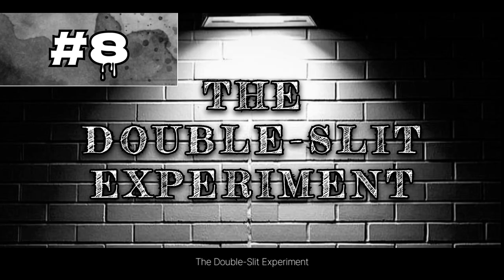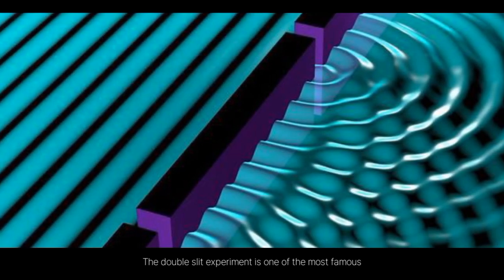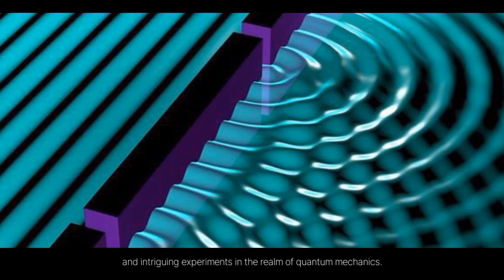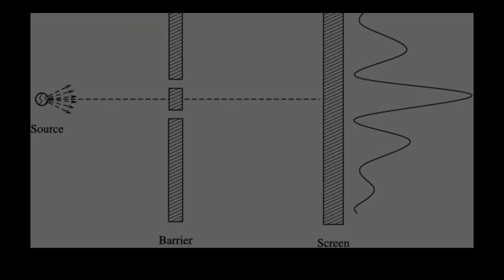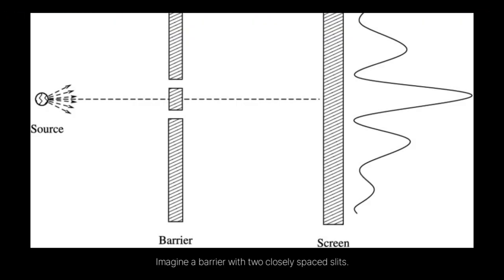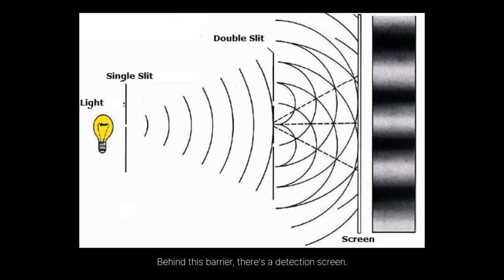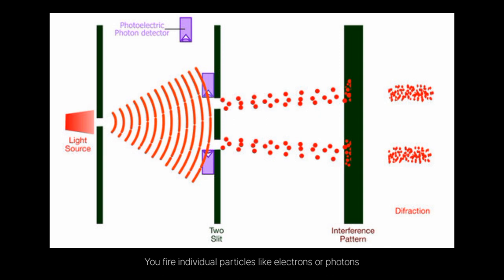The double slit experiment. The double slit experiment is one of the most famous and intriguing experiments in the realm of quantum mechanics. Imagine a barrier with two closely spaced slits. Behind this barrier, there's a detection screen. You fire individual particles like electrons or photons at the barrier. From a classical perspective, if you shoot particles at the two slits, you'd expect to see two bands directly behind the slits on the detection screen, since the particles should pass through the slits just like small bullets and hit the screen behind them.